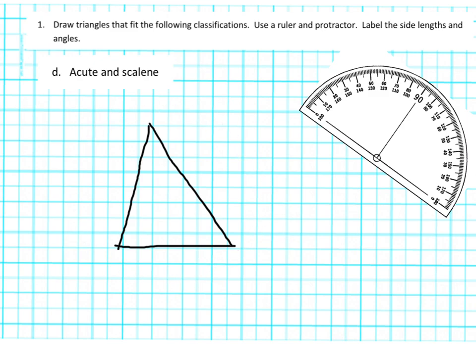Parents and teachers — what's the point of this lesson? Is the point really for a student to draw an acute and scalene triangle? No. The point is: one, clearly, to develop persistence like I had to; and two, to constantly review in their minds what is an acute triangle, what is a scalene triangle — to constantly review and practice putting these things in context as they try and build something.